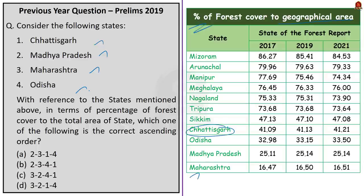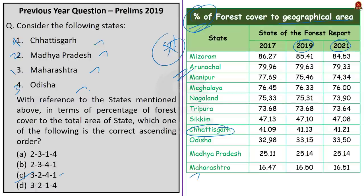The question asks for ascending order — starting from the least and ending with the most. So the correct order is: Maharashtra, then Madhya Pradesh, then Odisha, then Chhattisgarh — that is 3, 2, 4, 1, which is option C. You may ask whether this data changed in the 2019 or 2021 reports. The answer is no. Even in 2019 and 2021 reports, the same states hold their positions. There is only a meager change in percentages, but the order remains the same. There might be a change after 20-30 years, but no immediate change is expected.